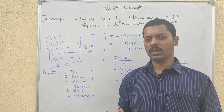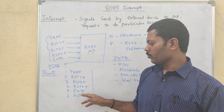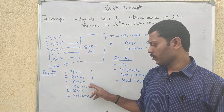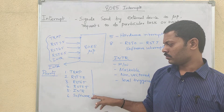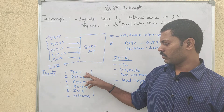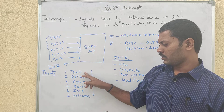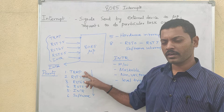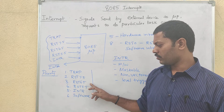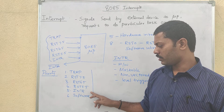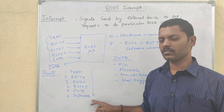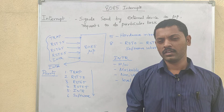This is the priority note for the 8085 microprocessor: first priority is Trap, then RST7.5, RST6.5, RST5.5, and INTR. Next topic is software interrupts.